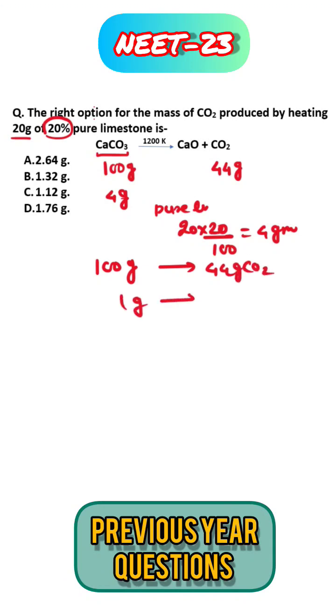1 gram produces 44 by 100. So 4 grams produce 44 by 100 into 4. This means 1.76 grams. So the answer is 1.76 grams.